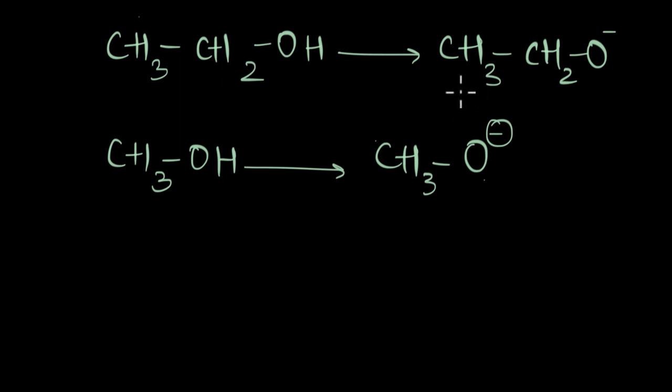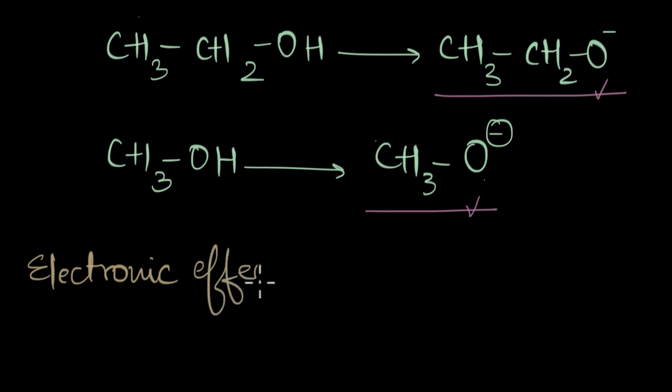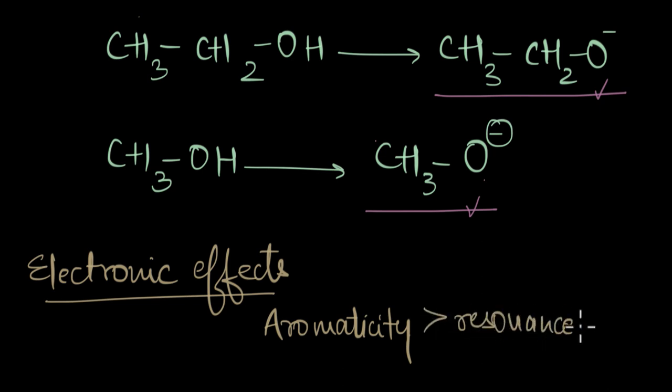And from here, there is only one step and arguably the most important step of such kind of problems. We need to compare the stability of this molecule with this molecule. How can we do that? How do we compare the stability of this molecule with that molecule? We take the help of something called electronic effects. As we learned before, to stabilize anions, we need aromaticity which provide the maximum stabilization. Right after aromaticity, we have resonance. And right after resonance, we have inductive effect.